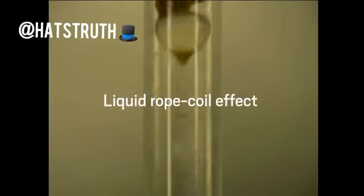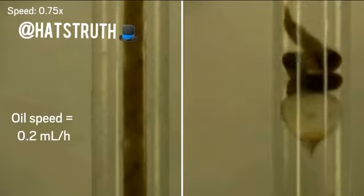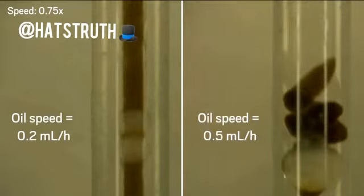The helical motors get their signature shape through the liquid rope coil effect. This effect depends on precisely controlling the flow speed of each fluid. For instance, if the oil is injected slowly, the material comes out fairly straight, but as you increase the oil speed, you'll see the material start to form coils.